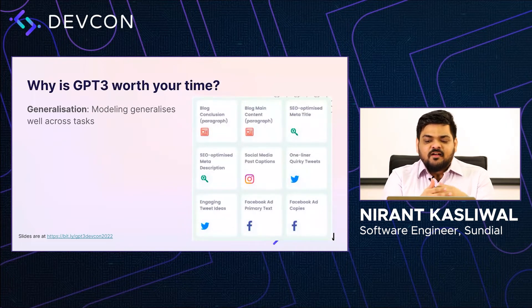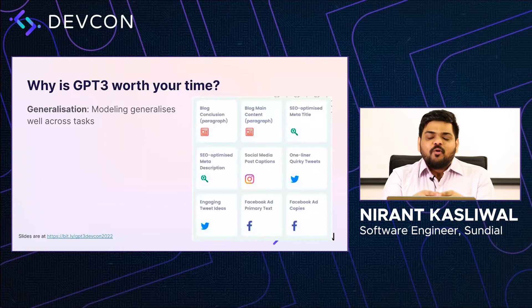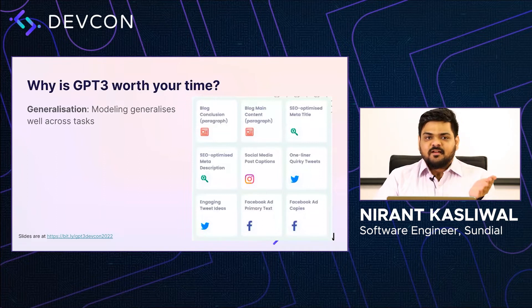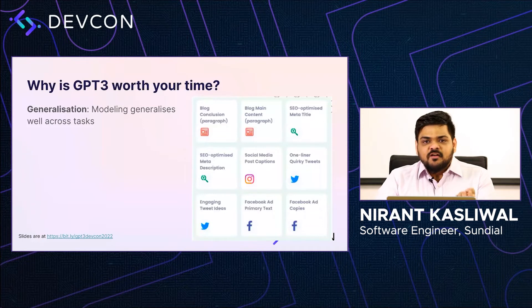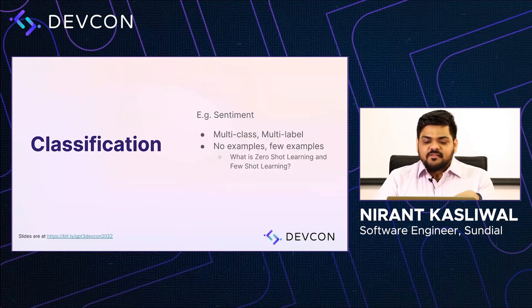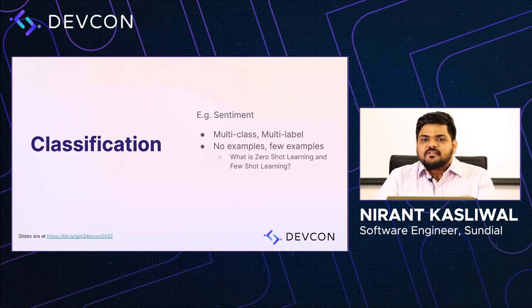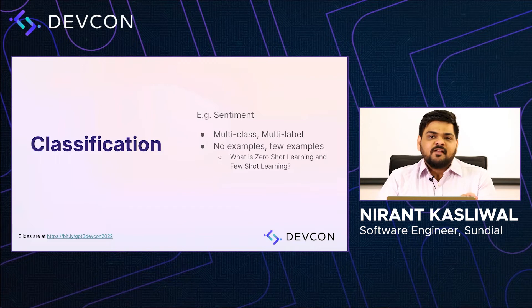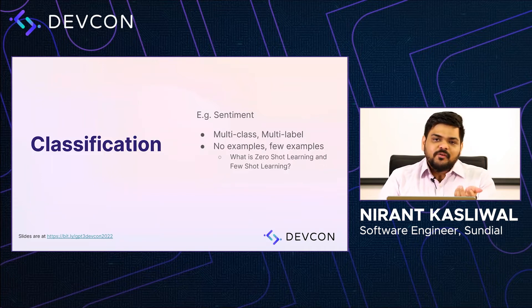GPT-3 has more than one use case. Some commercial examples are generating ideas for blogs, one-line tweets, and even bullet points which can be expanded into blogs. You can generate text as you want and apply it across the stack. The only real limitation to keep in mind is that you cannot do really long-form text generation — a short story of a Nathaniel Hawthorne or Enid Blyton length is something GPT-3 is not great at today. Basic tasks like sentiment classification are something GPT-3 does out of the box really well.